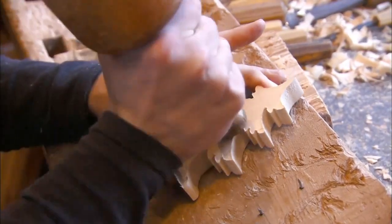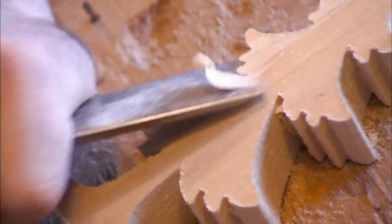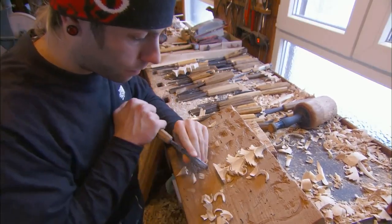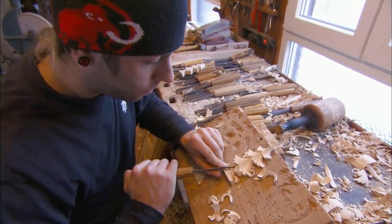To steady the piece, he mallets it to nails protruding from a block of wood. Then he begins carving, using up to 50 different knives to sculpt exceptionally fine detail.